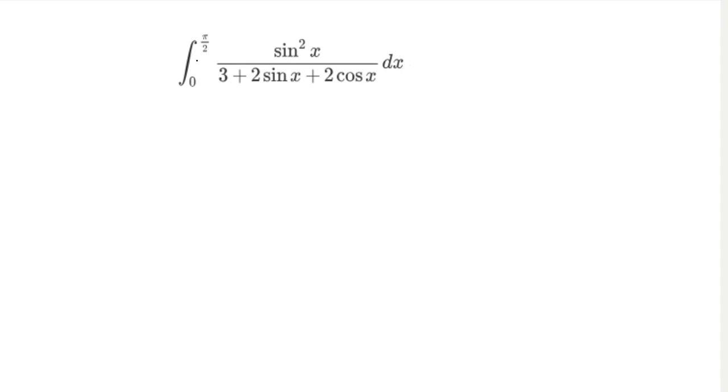If you plug in a plus b minus t, that substitution doesn't change the bounds because you basically get a negative, but then it's from b to a, so then you can use that negative to flip it. So you're basically just plugging in a plus b minus t wherever you see an x.